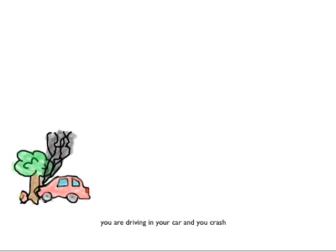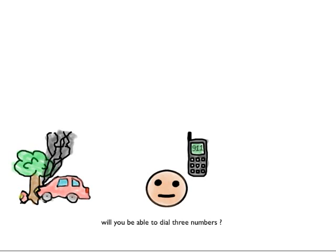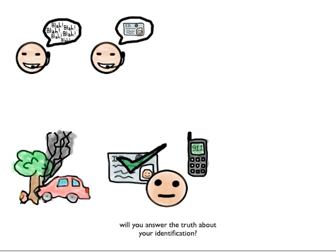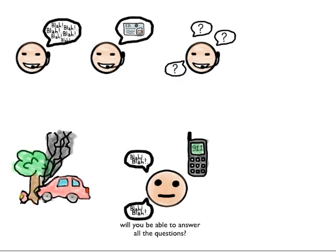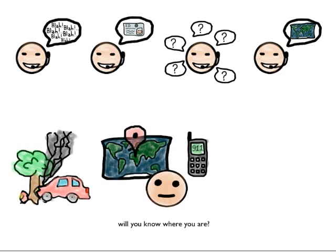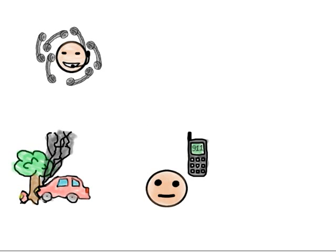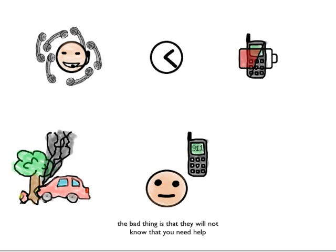Let's imagine that you are driving in your car and you have a crash. Will you be able to dial free numbers? Will you be able to talk? Will you answer truthfully about your identification? Will you be able to answer all the questions? Will you know where you are? Of course, if someone on the other side answers you. But things can go wrong, because the telephone line can be overloaded and you need to wait too long, and maybe discharge all the phone battery. The bad thing is that they will not know that you need help. But the worst thing is that we can lose a life.